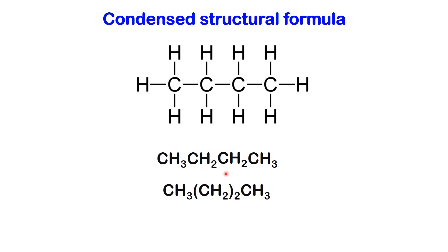In condensed structural formulas, repeating groups can be efficiently represented using parentheses and a subscript number to denote the number of repeating units. For instance, in this molecule, there are two repeating CH2 groups in the middle. This can be represented by replacing CH2CH2 with CH2 enclosed in parentheses and a subscript 2 outside the parentheses, indicating the repetition.